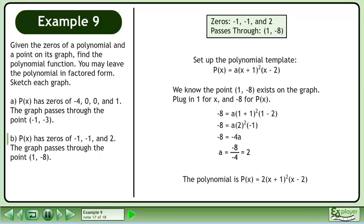The polynomial is P(x) = 2(x + 1)²(x - 2).